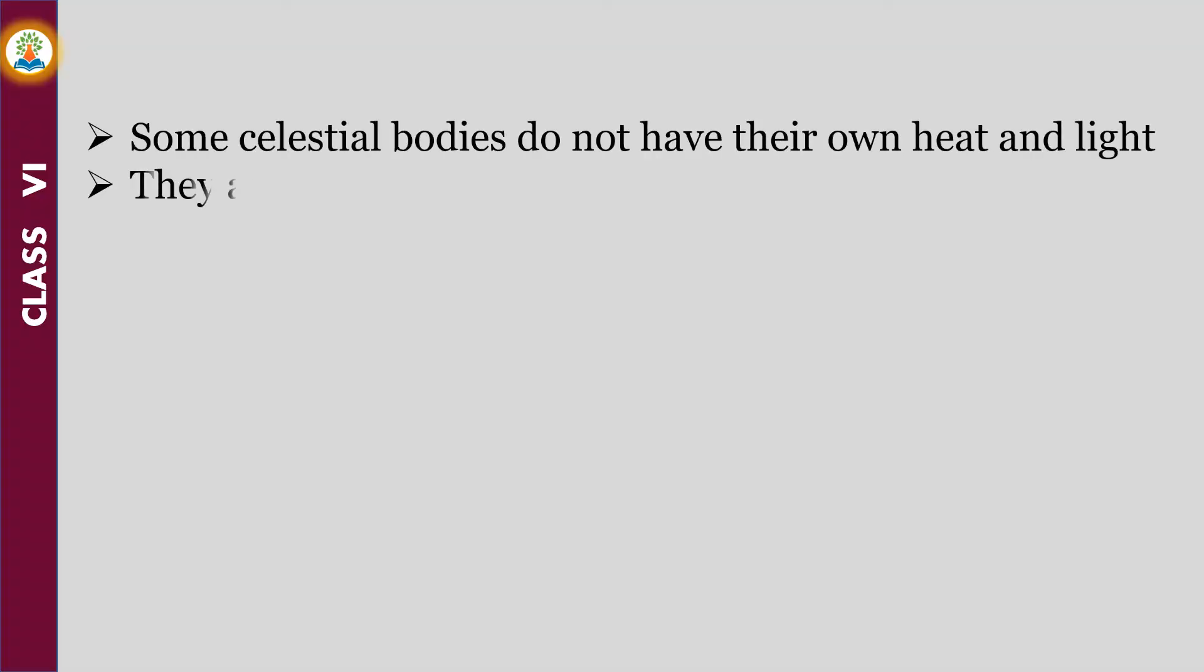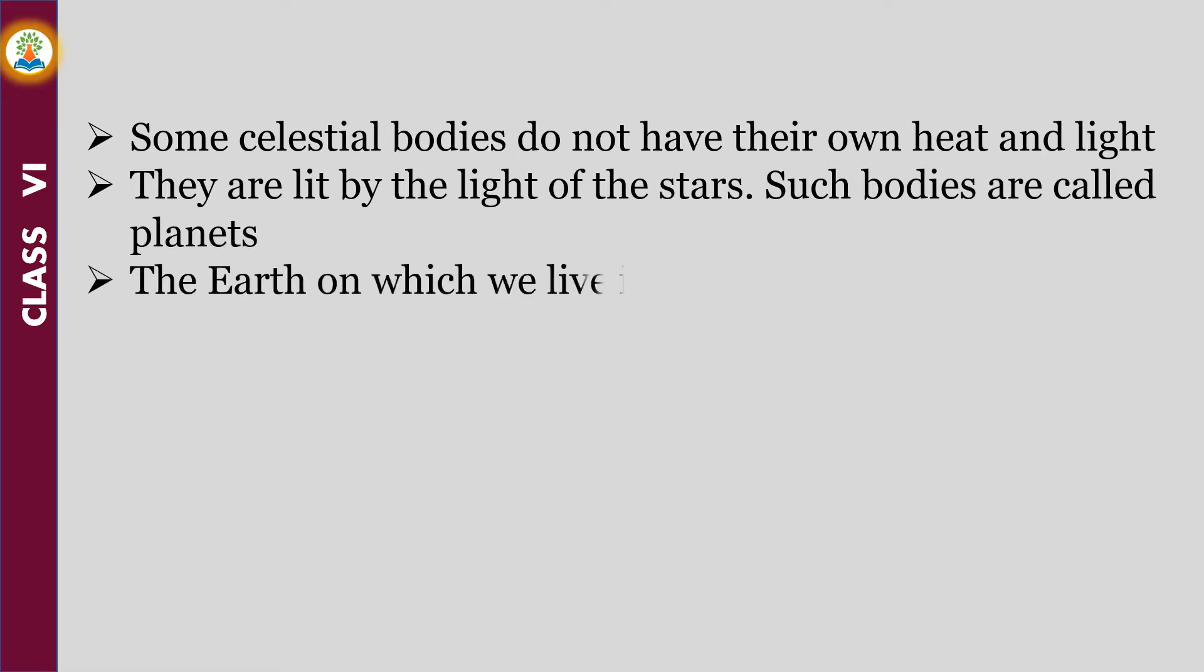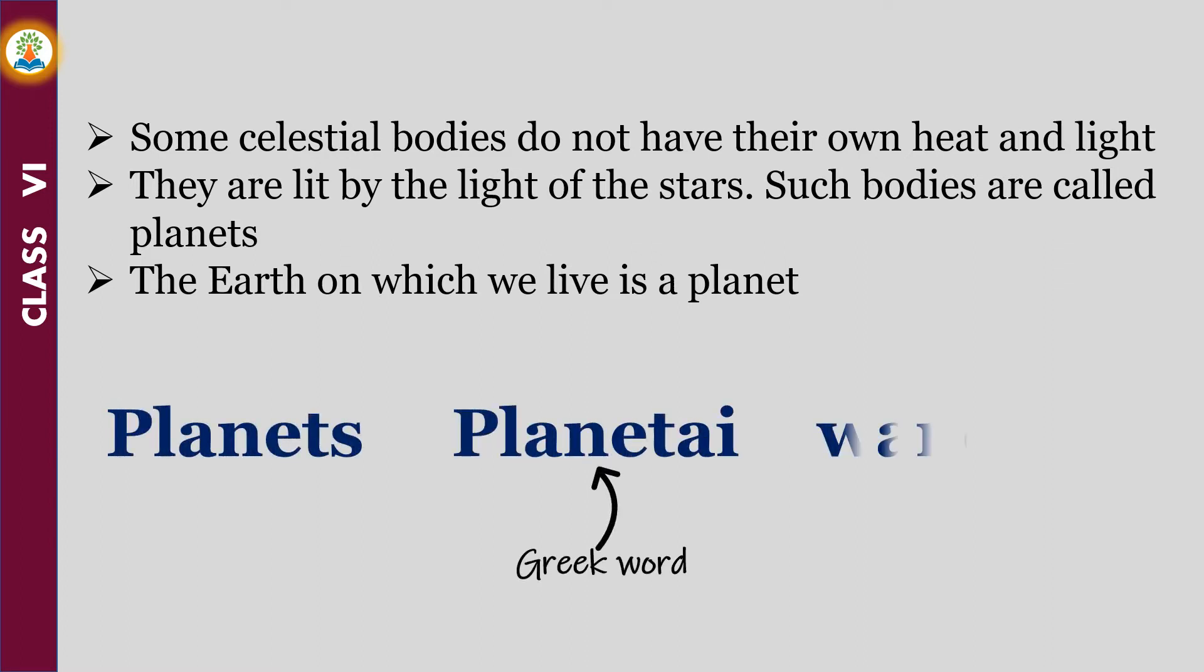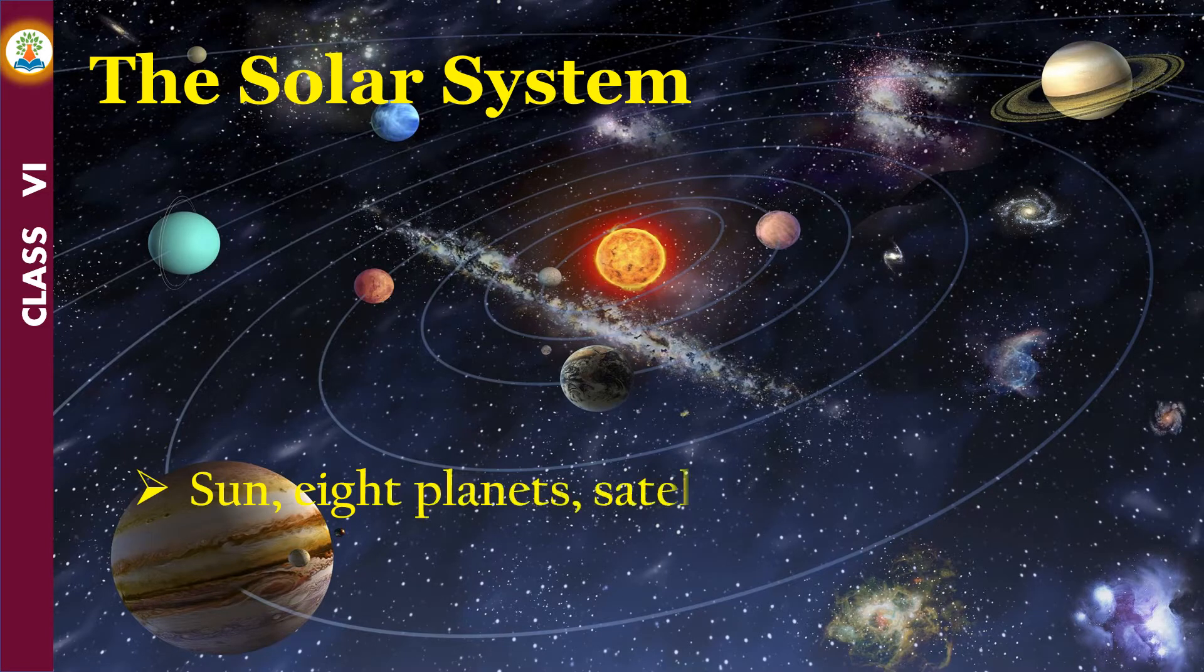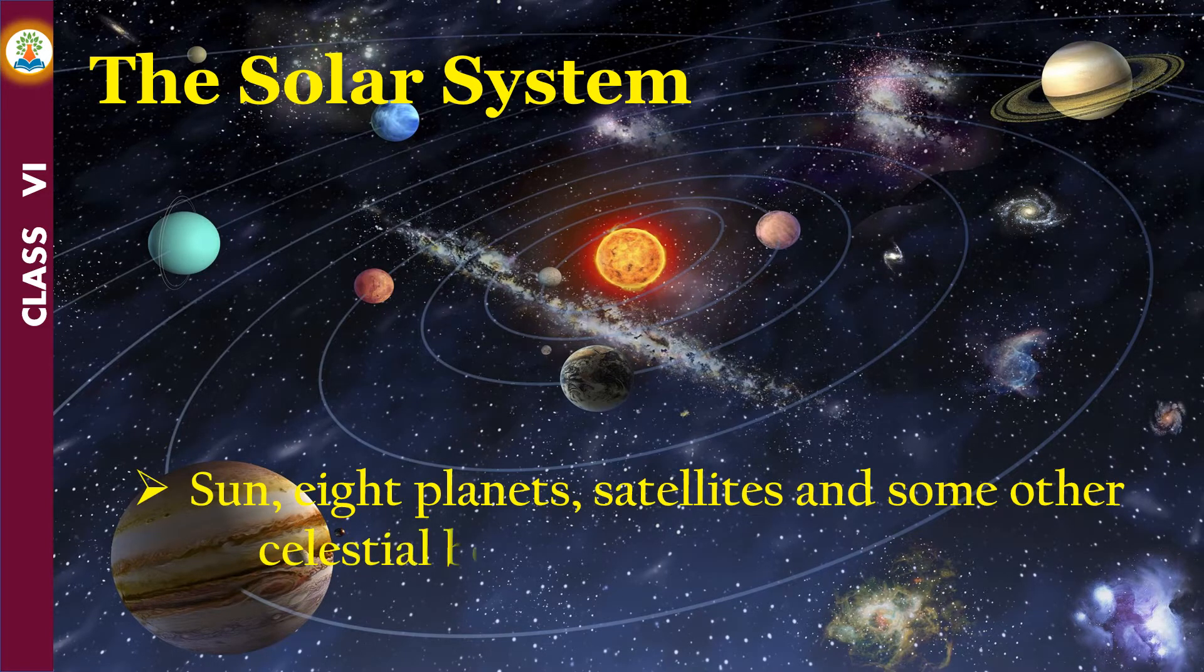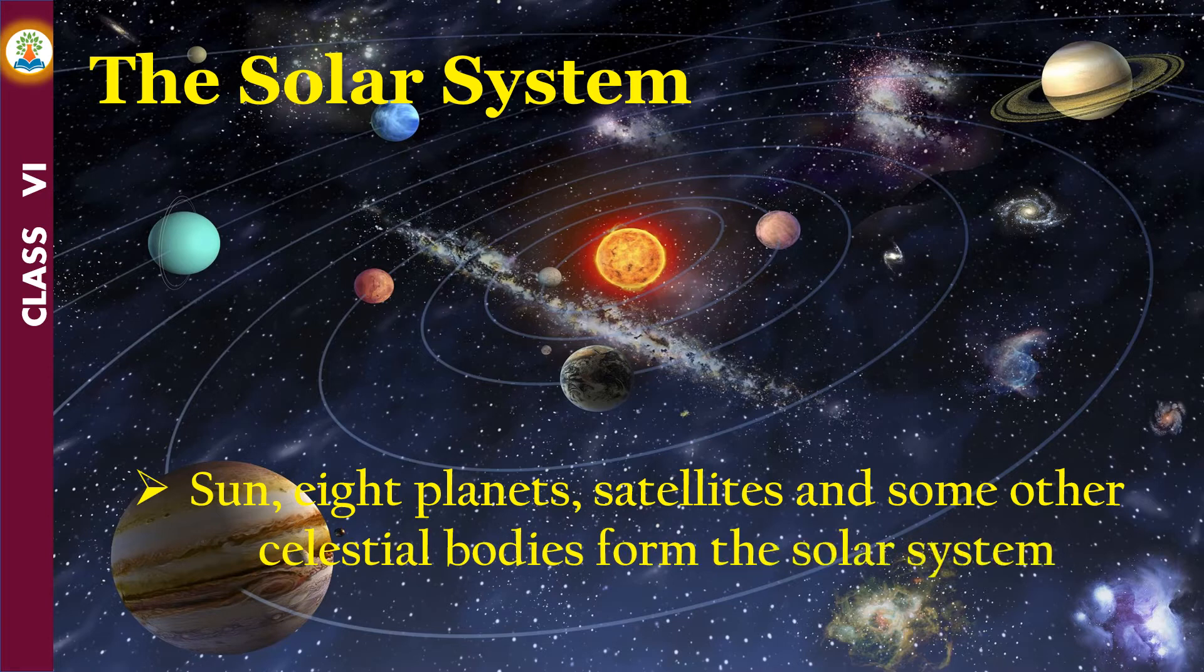Some celestial bodies do not have their own heat and light. They are lit by the light of the stars. Such bodies are called planets. The Earth on which we live is a planet. The word planet comes from the Greek word planetai, which means wanderers. The sun, eight planets, satellites, and some other celestial bodies form the solar system. We often call it a solar family with the sun as its head.